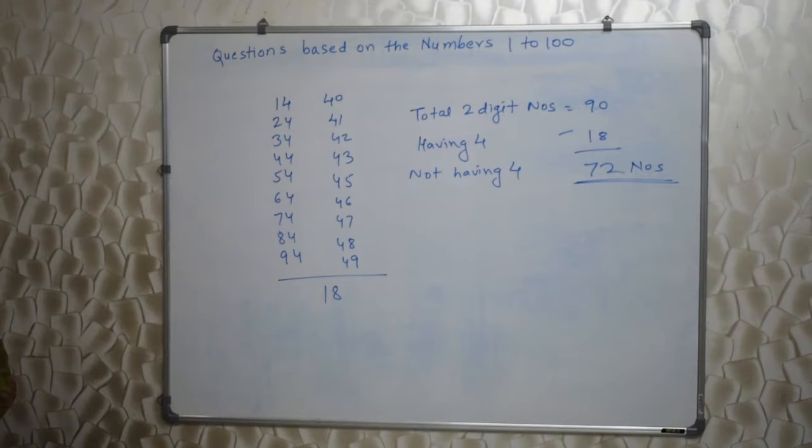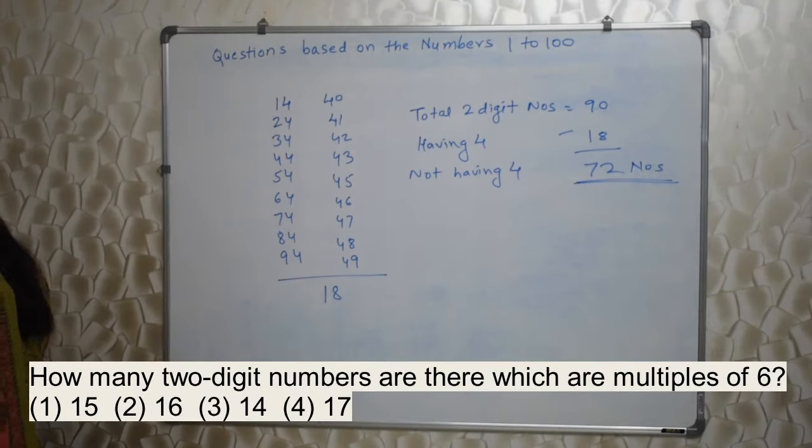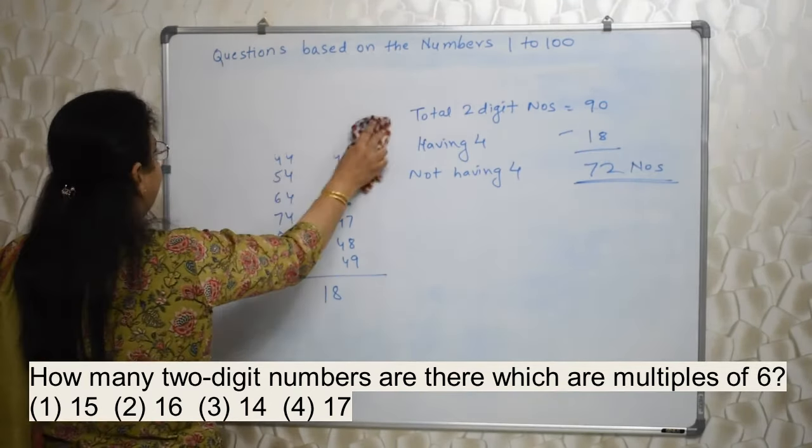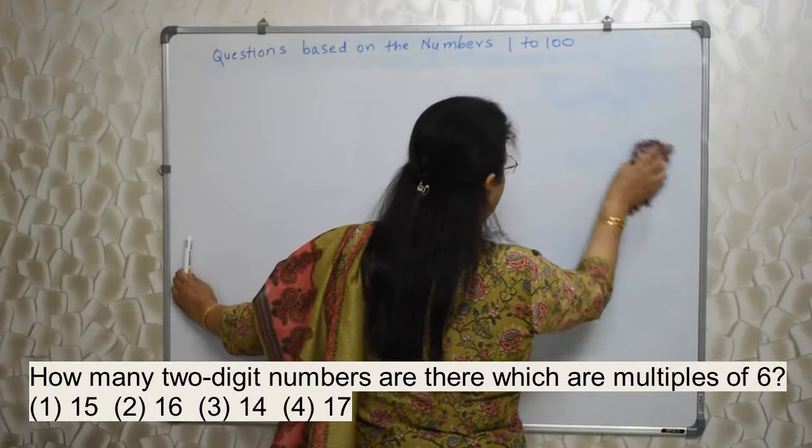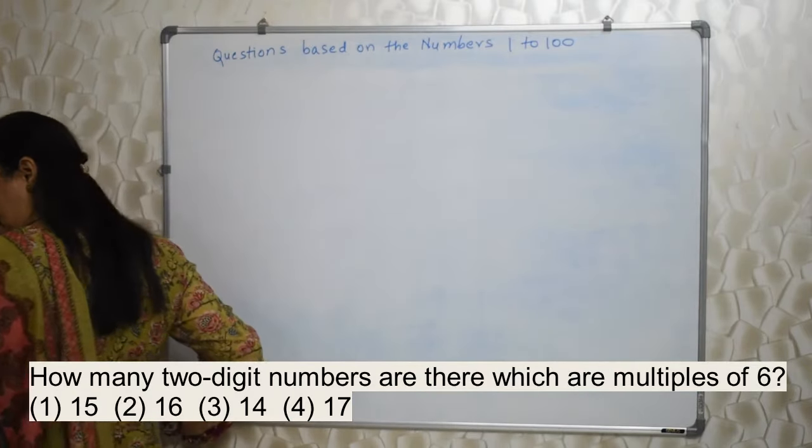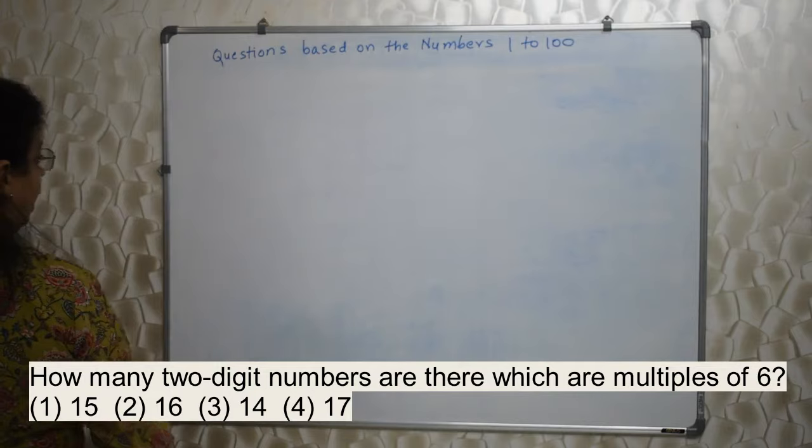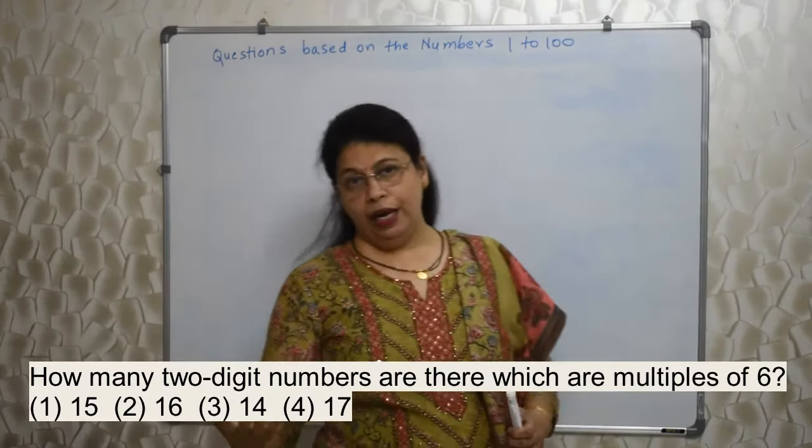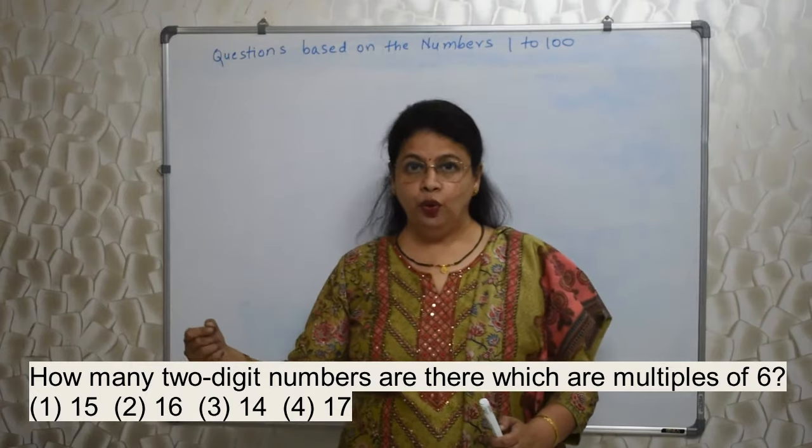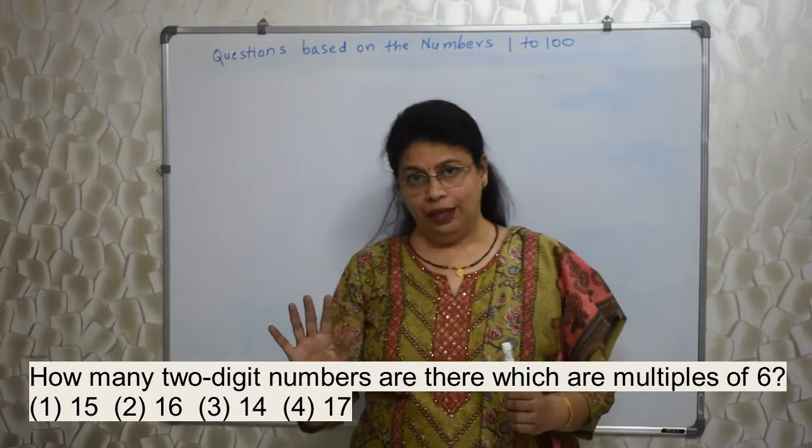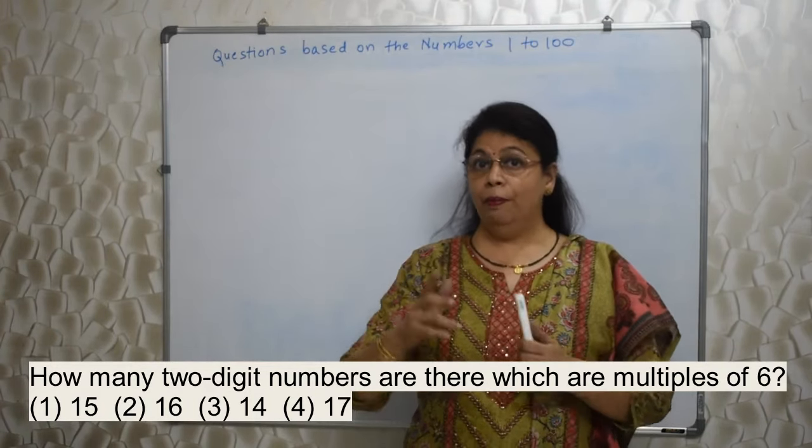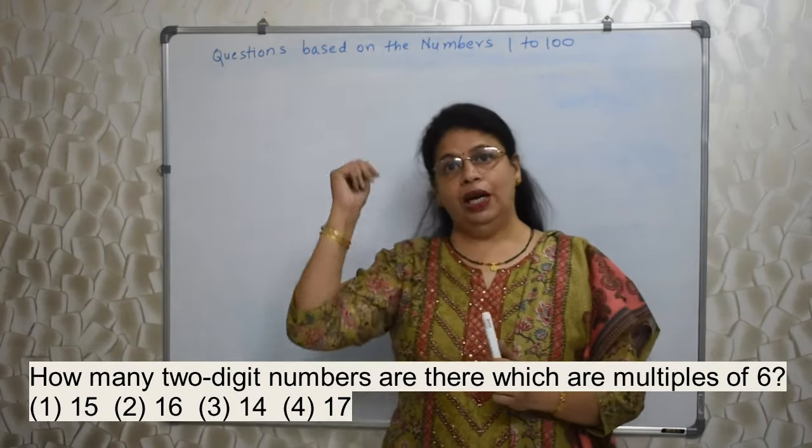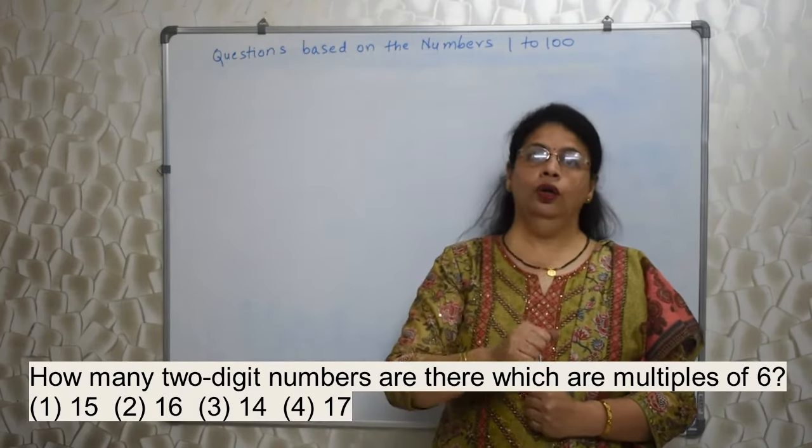Next sum: How many 2-digit numbers are there which are multiples of 6? Very easy and very interesting. Multiple means table. Some students may just calculate manually and give the answer. There is nothing wrong in that. But you should always know the smarter way of arriving at the answer, because if the number is big, if they want to twist, if they ask 3 digits, then what will you do? So you should know the way.